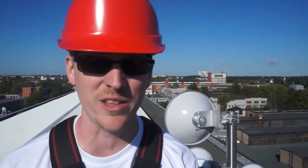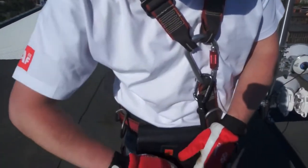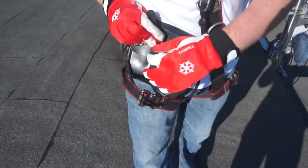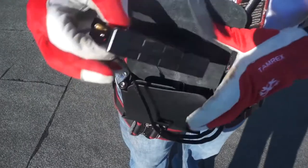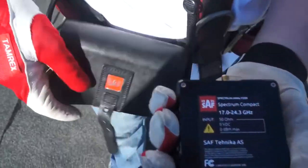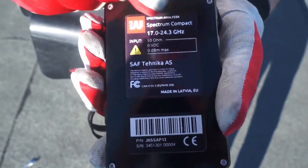Unfortunately, my installers didn't tell me what polarity we're installing the link on today, so I'm going to use this brand new kit from SAF Technica called Spectrum Compact. Inside of this leather pouch is the Spectrum Compact unit itself. This model operates between 17 gigahertz and 24.3 gigahertz.